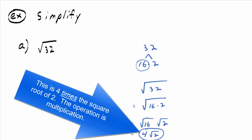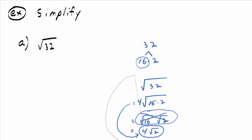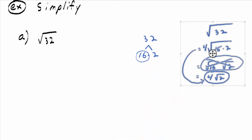That's the easiest method — you could even skip a step and just pull out the square root of 16, which is 4, and go right to the answer. But I'm going to show you a longer method that's consistent with how we simplify things like the square root of x to the 15th. Trust the process.